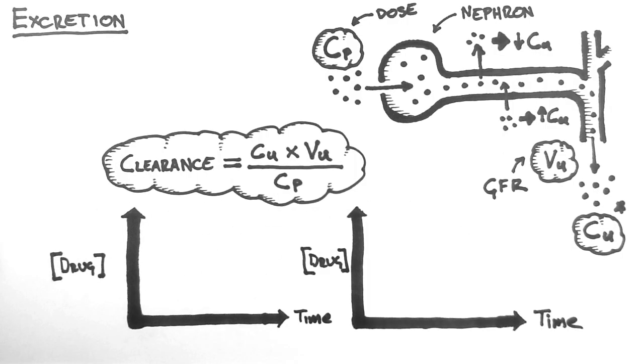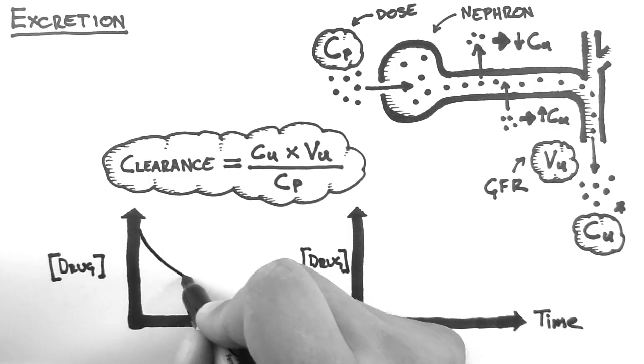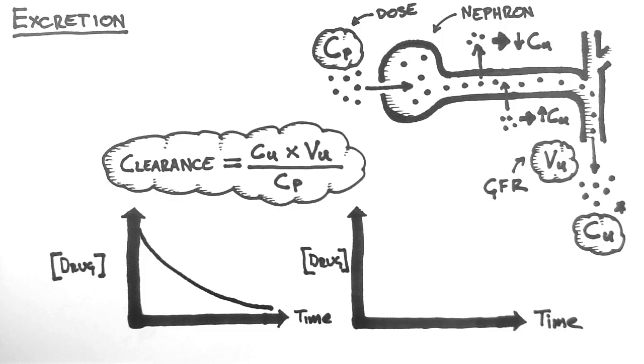In the system I have drawn above, the higher the concentration in the plasma, the faster the drug will be excreted. This makes sense because the more drug in the plasma the more in the filtrate and thus the more drug in the urine. This will give us a curve that looks like this. So the speed at which the drug is being eliminated slows down as the plasma concentration drops.